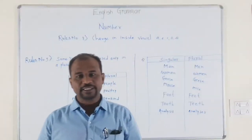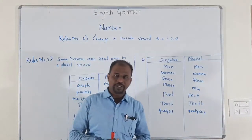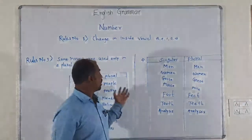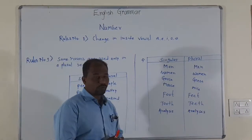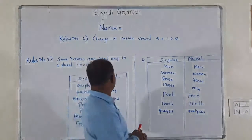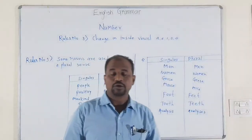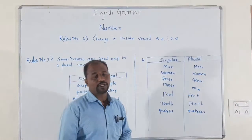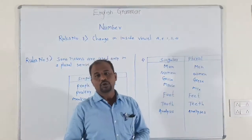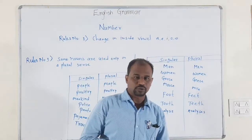Hello students, welcome back to online teaching. We have been seeing the grammar and the number, and we have completed seven rules. Now we will see rule number eight and nine. Number is a major part of English grammar, so some rules are remaining and we will today complete the rules of numbers.